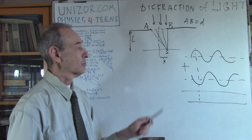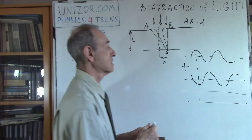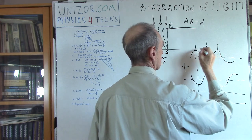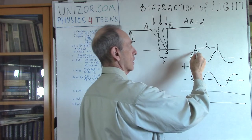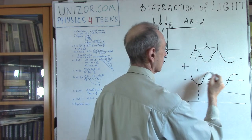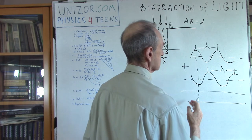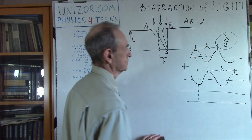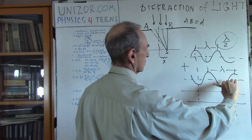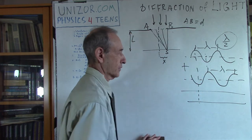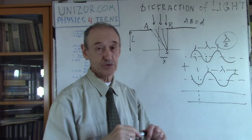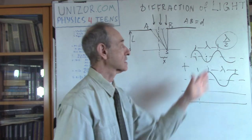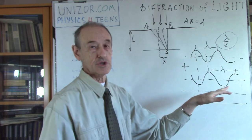Anti-phase means the shift between two waves is exactly lambda over 2. Out-of-phase can be anything not exactly in phase, but anti-phase means shifted by exactly lambda/2 — meaning the two waves completely cancel each other.